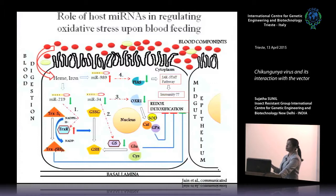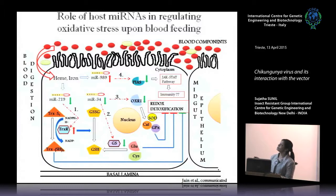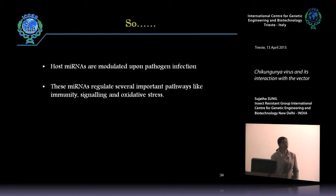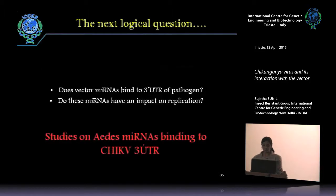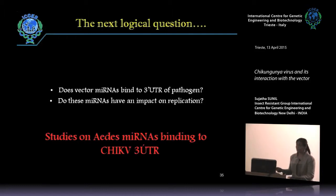From all these experiments we see that host microRNAs modulate pathogen infection, and these microRNAs regulate several important pathways associated with signaling, oxidative stress, and immunity. The next logical question, with respect to chikungunya, was whether vector microRNAs bind to the 3' UTR of the pathogen and whether those microRNAs have an impact on regulation. Apart from microRNAs being modulated in the host, we also see that microRNAs may target the chikungunya untranslated region and may regulate virus development.